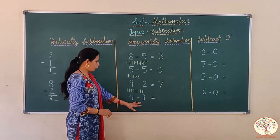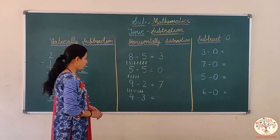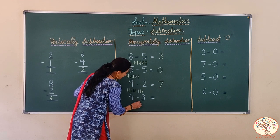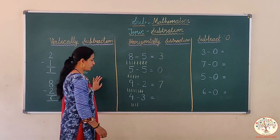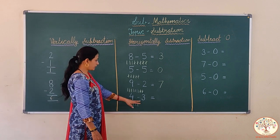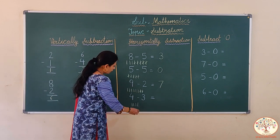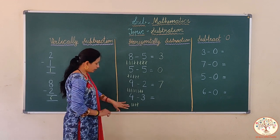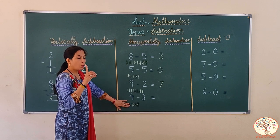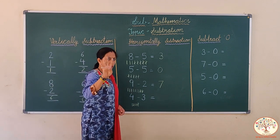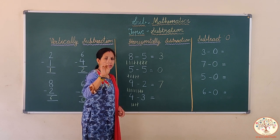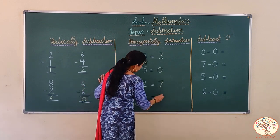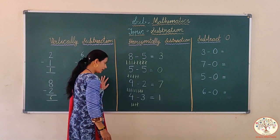Now look here. 4 minus 3. We will draw 4 lines: 1, 2, 3, 4. We need to minus 3, so we will cut 3 lines: 1, 2, 3. How many lines are remaining? Only 1 line. 4 fingers open करेंगे, 3 fingers close कर देंगे — only 1 finger left. 4 minus 3 is equal to 1.